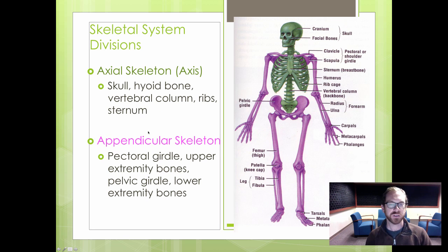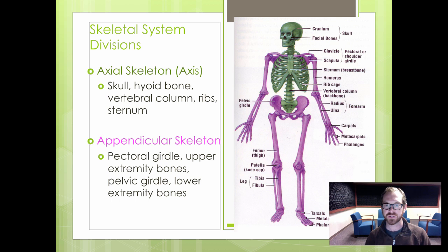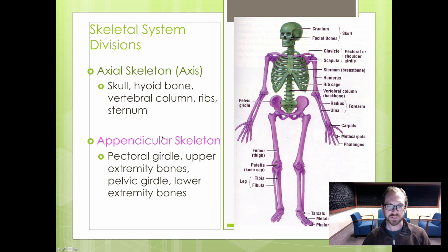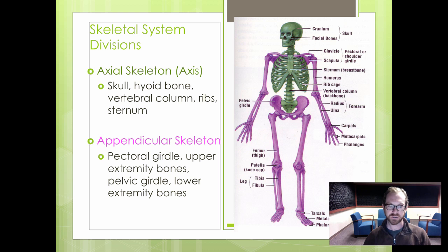You have two types of skeletal systems. Your axial skeleton, highlighted in green in the image to the right, includes all your bones associated with the vertebral column. Then you also have the appendicular skeleton, highlighted in purplish-pink, which includes all the bones of your upper and lower extremities.